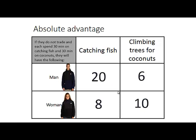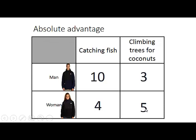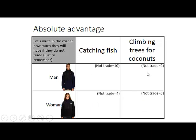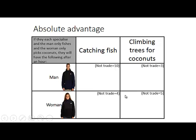If they do not trade and each spend 30 minutes catching fish and 30 minutes on coconuts, they will have half of everything they can do in an hour. So the man will have 10 fish and 3 coconuts, and the woman will have 4 fish and 5 coconuts. If they each specialize — the man only fishes and the woman only picks coconuts — after an hour the man will have caught 20 fish and the woman will have collected 10 coconuts.